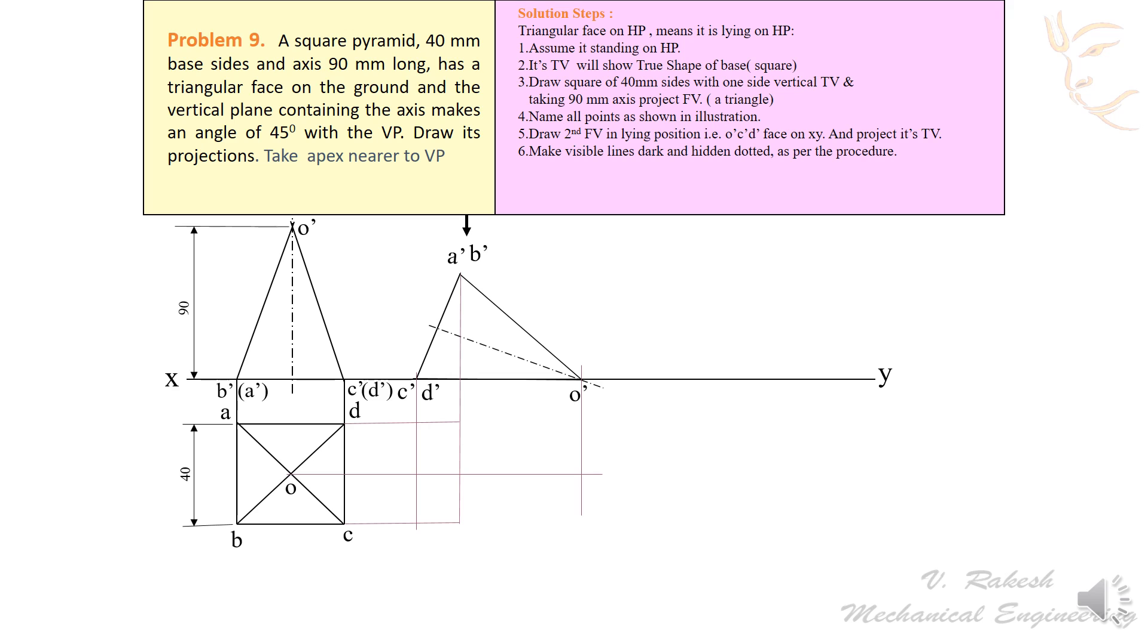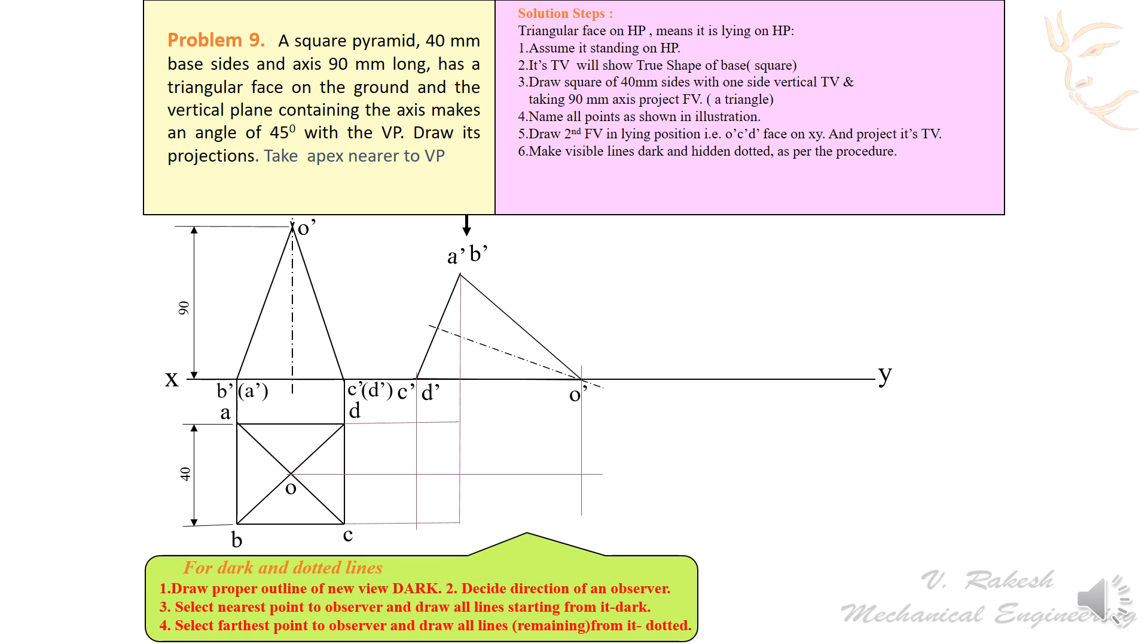The next important point is make visible lines dark and hidden dotted as per the procedure. The guidelines are given in this statement outline. This follows four important points: First, draw proper outline of new view dark. Second, decide direction of an observer. Third, select nearest point to observer and draw all lines starting from it dark. Fourth, select farthest point to observer and draw all lines remaining from it dotted.